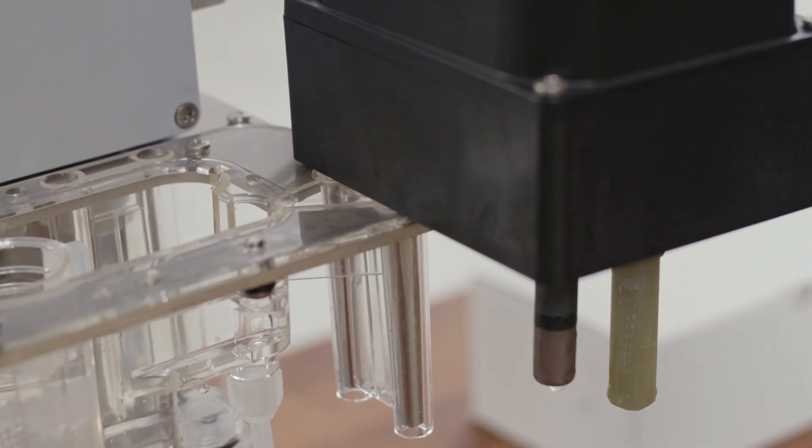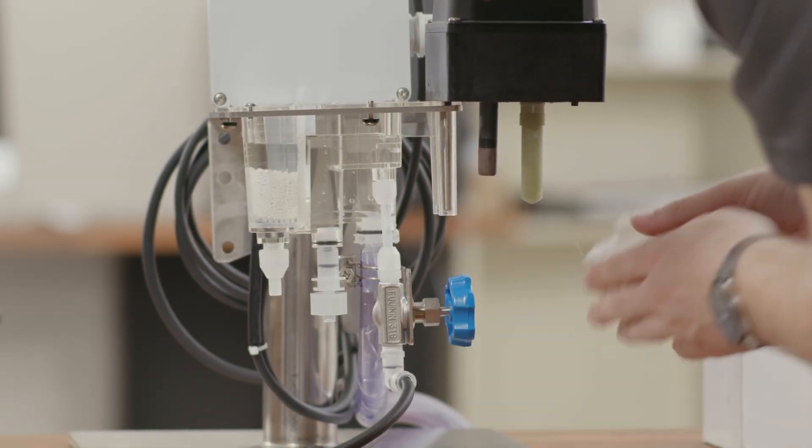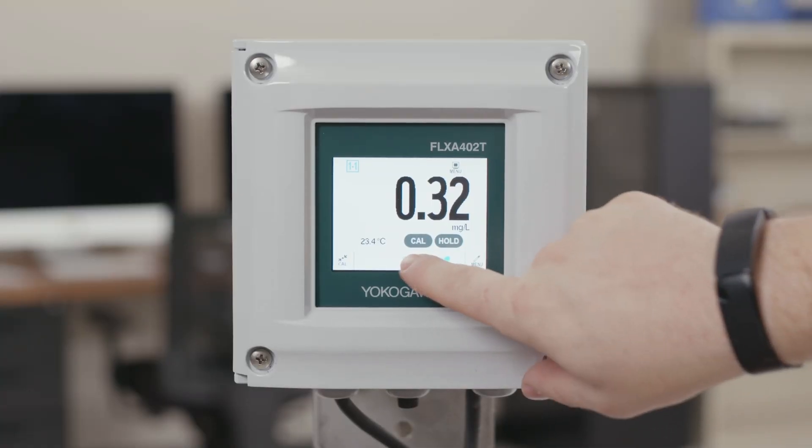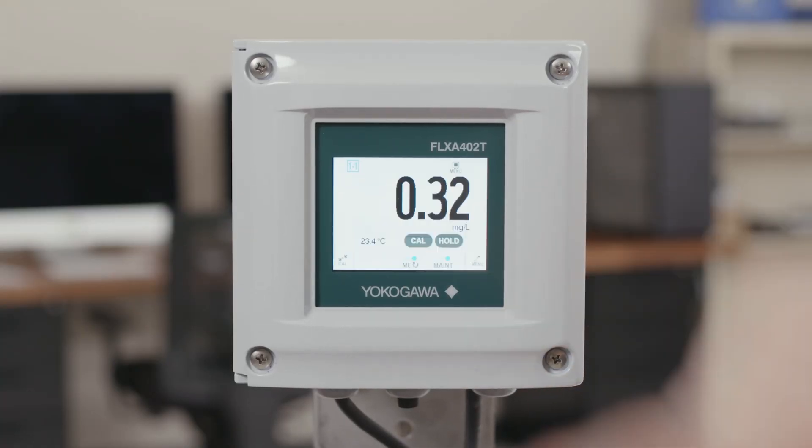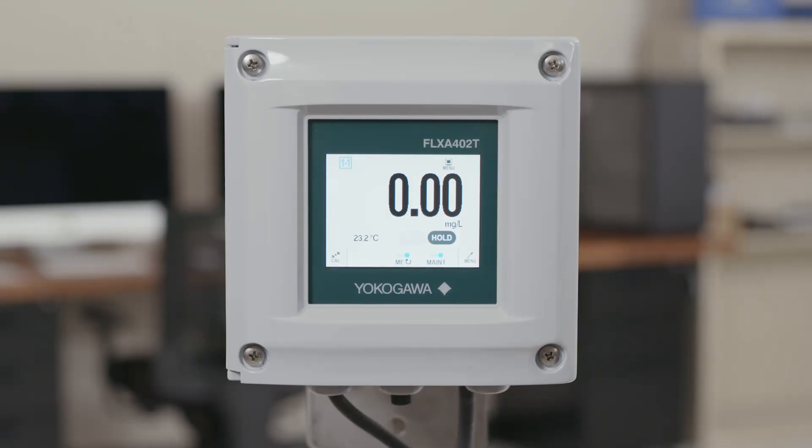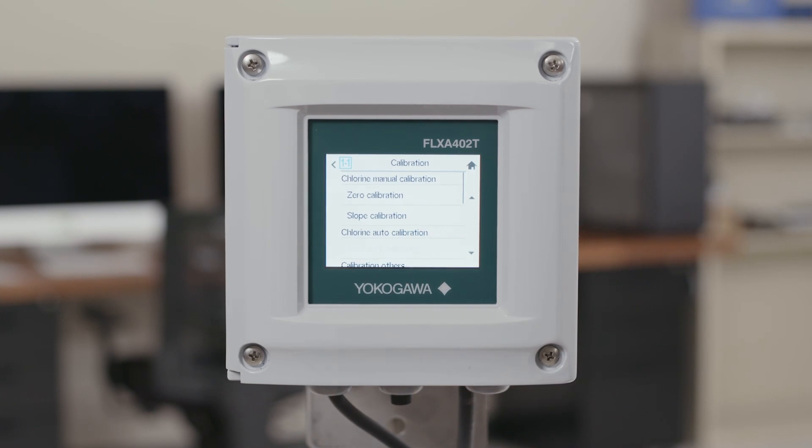Once you have put the measurement assembly into maintenance position, you can go ahead and dry off the measurement electrode so that there's no excess process on it and make sure that the motor is turning and the measurement electrode is spinning. Once it is spinning, you can go ahead and click the calibration button on the home screen which will take you to the calibration menu.